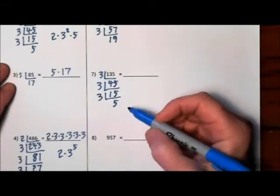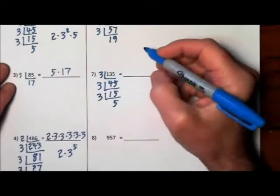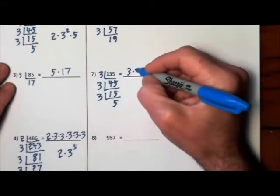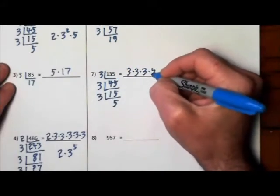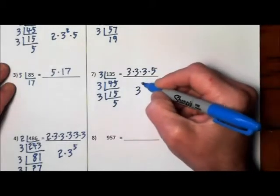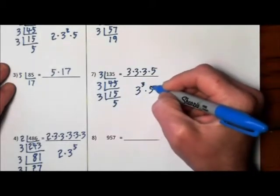You have a prime down here, it's time to stop. So the prime factorization of 135 is 3 times 3 times 3 times 5 or 3 to the third times 5.